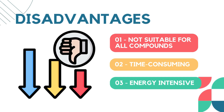Now moving on to the disadvantages of steam distillation. The first is that it is not suitable for all compounds — some compounds may decompose or lose their properties due to the energy of the steam. The second disadvantage is that it is time-consuming — the process can be relatively slow, especially for large-scale production. The third disadvantage is that it is energy-intensive — continuous steam generation requires significant energy input, making the overall process energy-intensive.